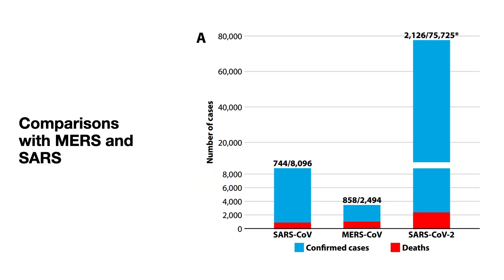Let us see how COVID-19 compares with MERS and SARS. The mortality rates in SARS and MERS were very high. However, the problem with SARS-CoV-2 is its high infectivity due to its highly contagious nature — it has infected millions. So even though it has a lesser mortality rate, the total number of deaths has well surpassed that of SARS and MERS.